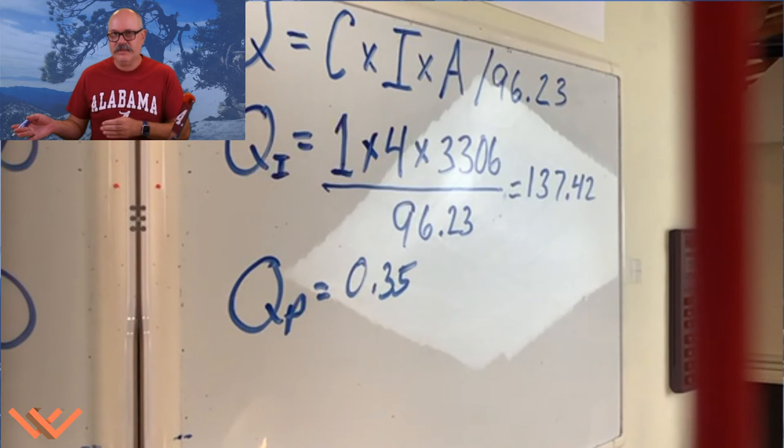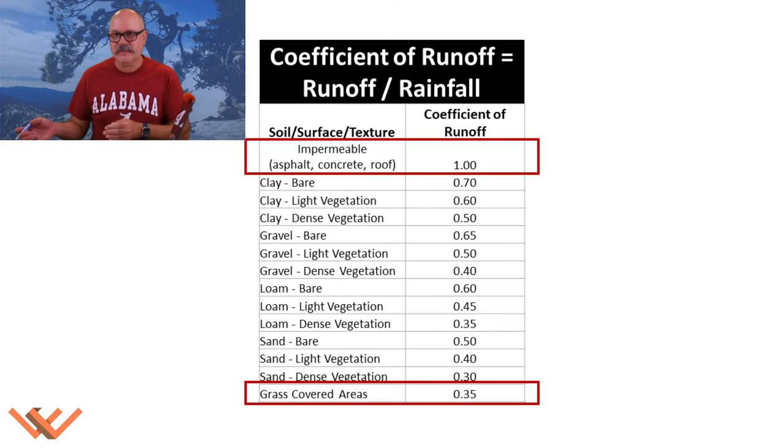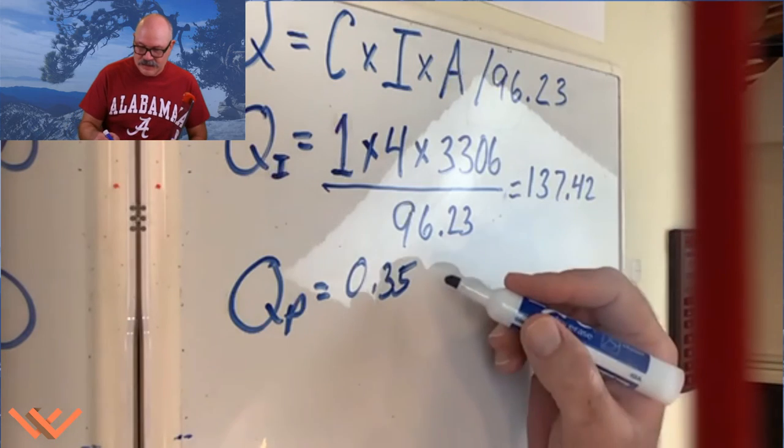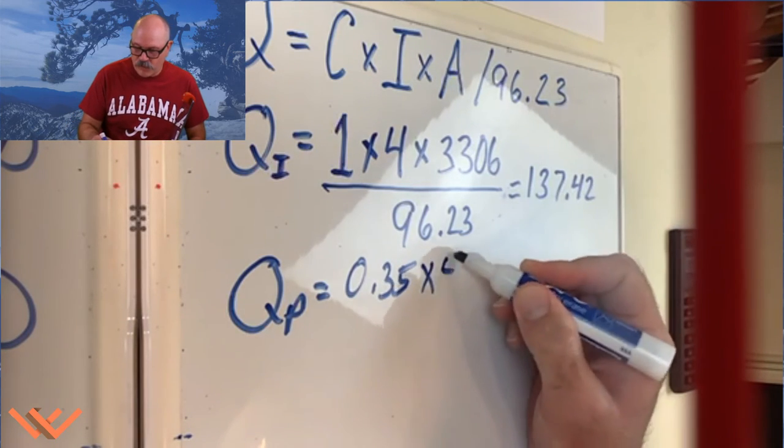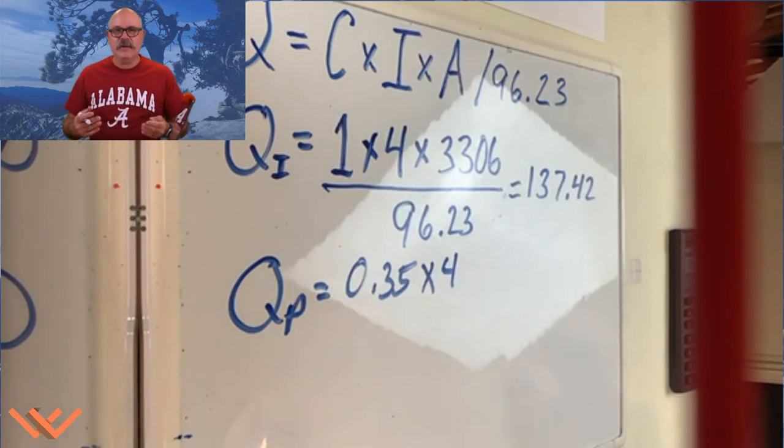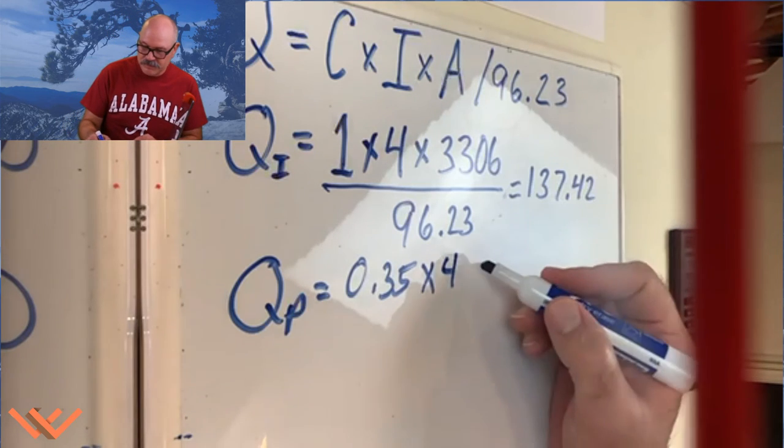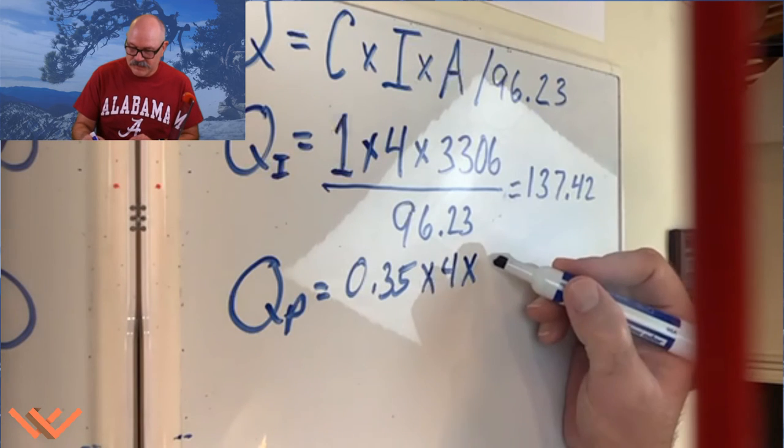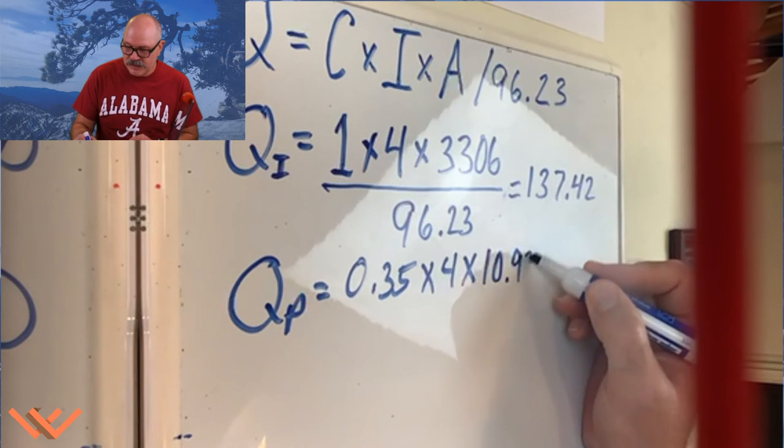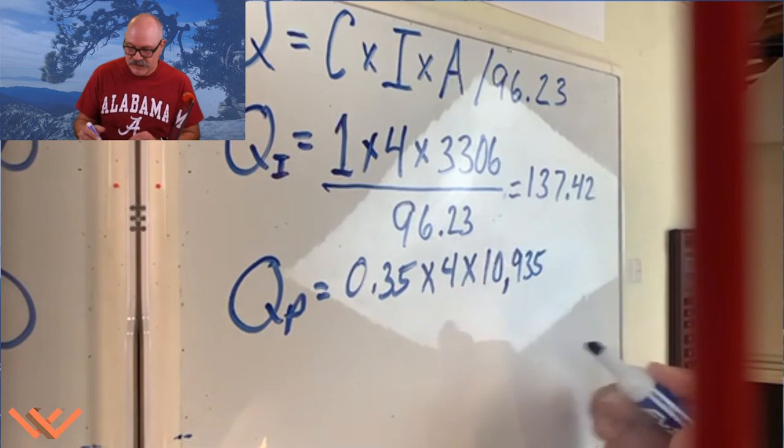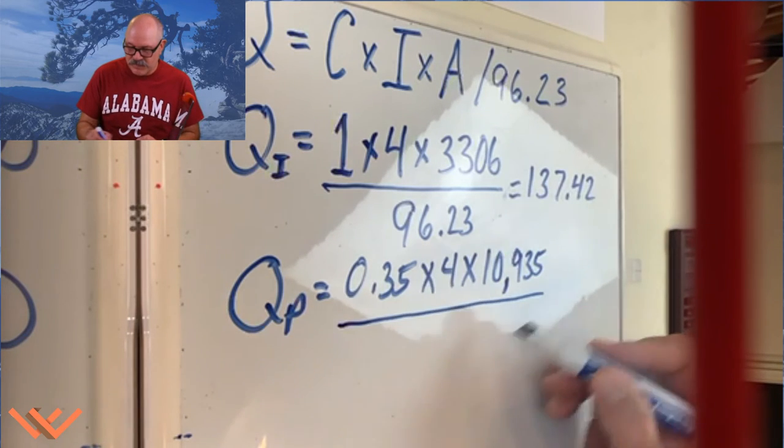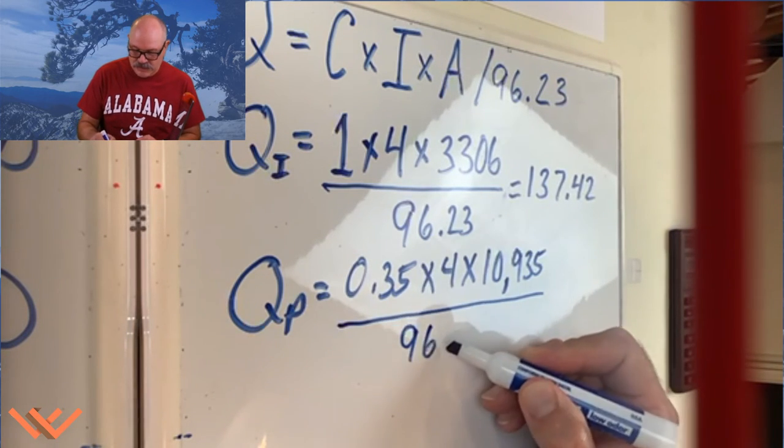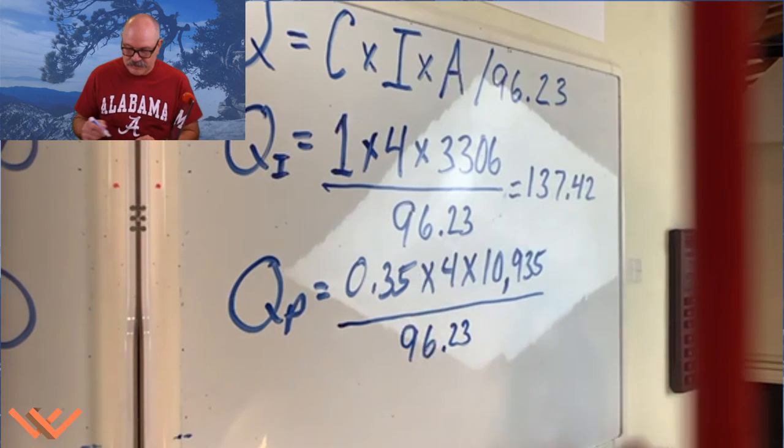You can see that in this chart, and then times that four, which is the rainfall intensity for that hundred year, times the area. So this is where the area is, it's going to be 10,935 feet, and we're going to divide that all by 96.23.